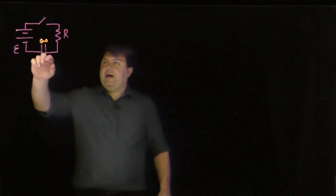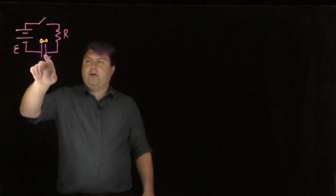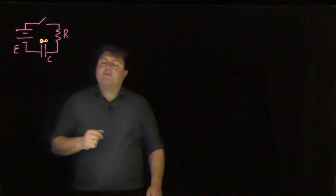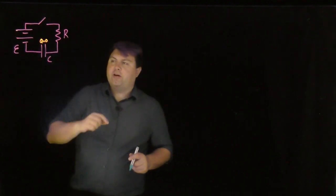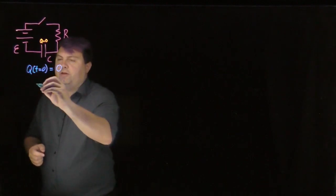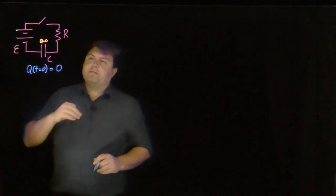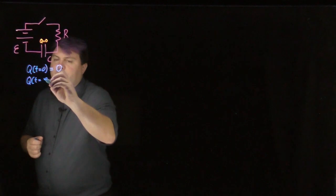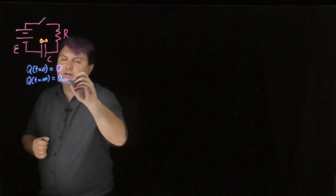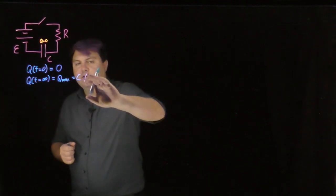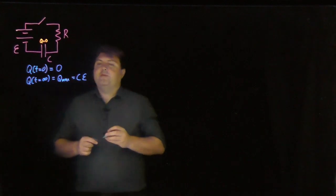Welcome. We have here a new RC circuit, now with a battery, and we are trying to charge this capacitor. We have some natural resistance in the wire, so our capacitor is going to start out with a charge of zero: Q(t=0) = 0. Eventually it will charge all the way up to Q_max, which equals C times the EMF, or voltage, of the battery.